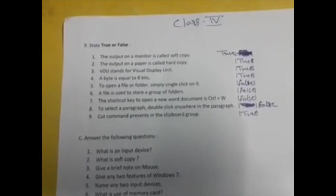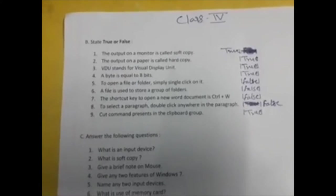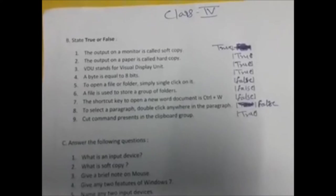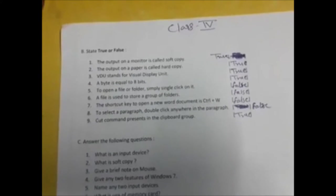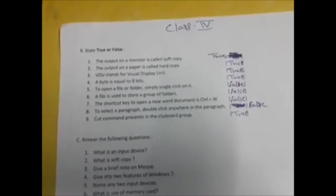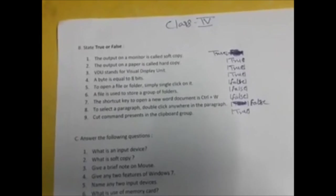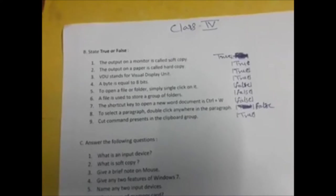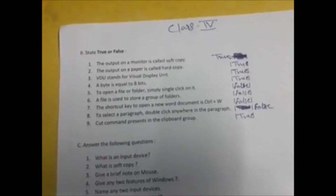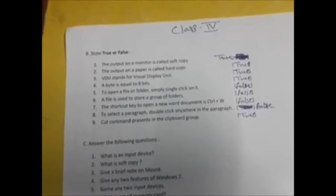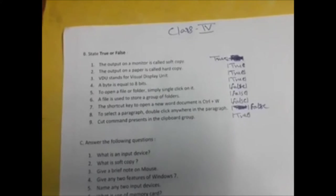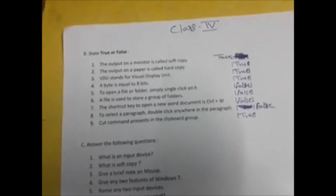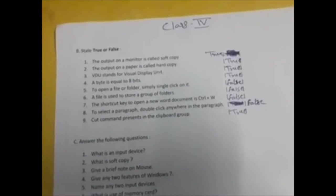A byte is equal to 8 bits. Yes, it is absolutely right, 8 bits is equal to 1 byte. Next is to open a file or folder, simply single click on it. No, we have to double click on any folder or files if you want to open it, so it is false. Next is a file is used to store group of folders. No, it's absolutely wrong. Folder is used to store multiple files and folders also. The file cannot store a group of folders, so it's false.